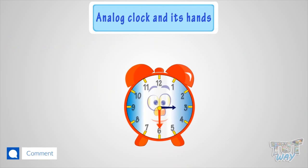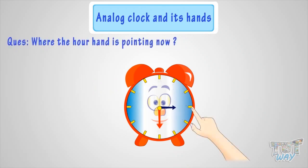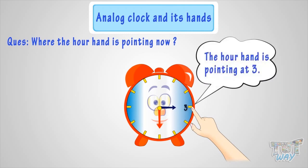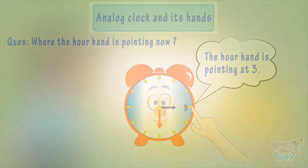Can you tell where the hour hand is pointing here? Yes, the hour is pointing at three. Good. Now you have a fair idea about the hands of a clock and the positions of numbers on the clock.